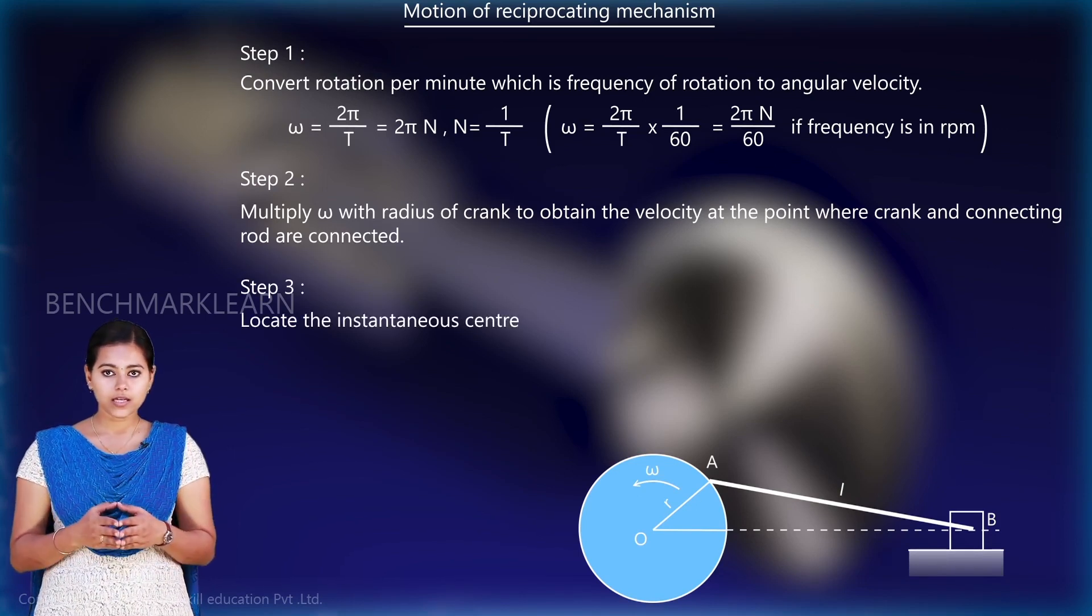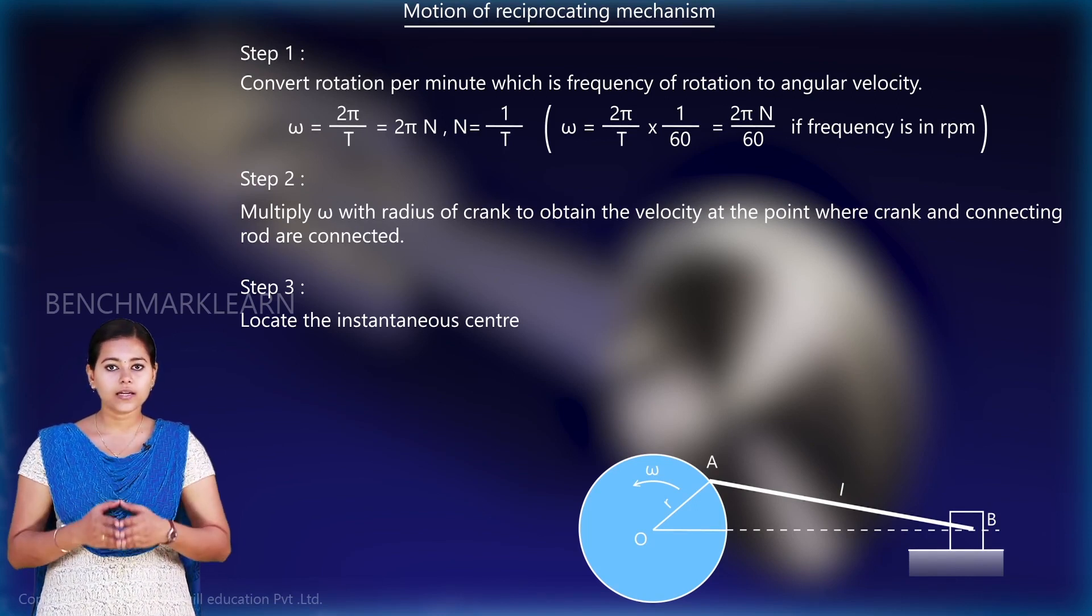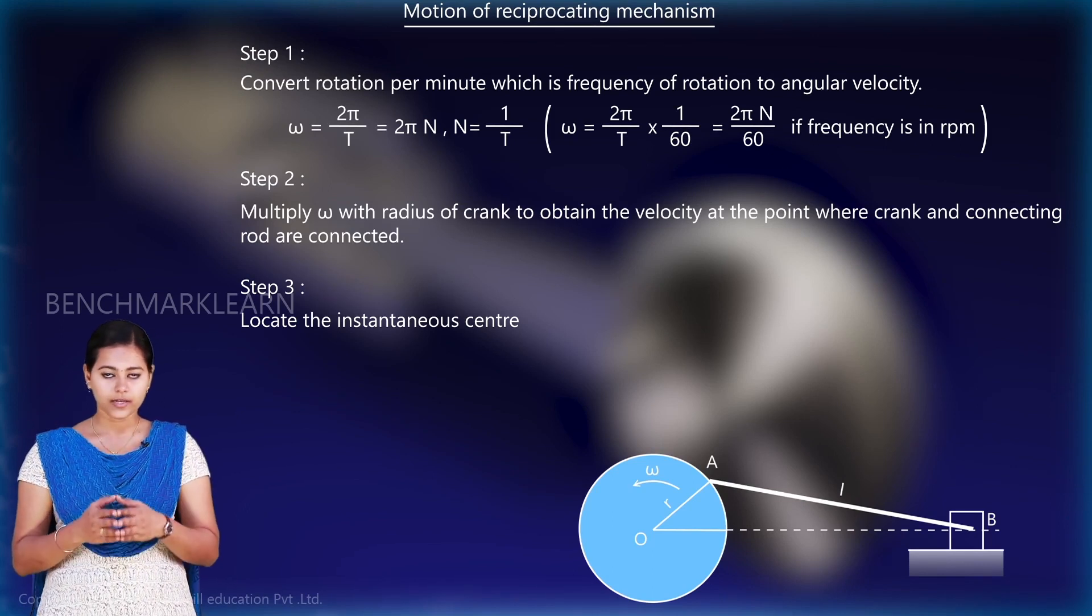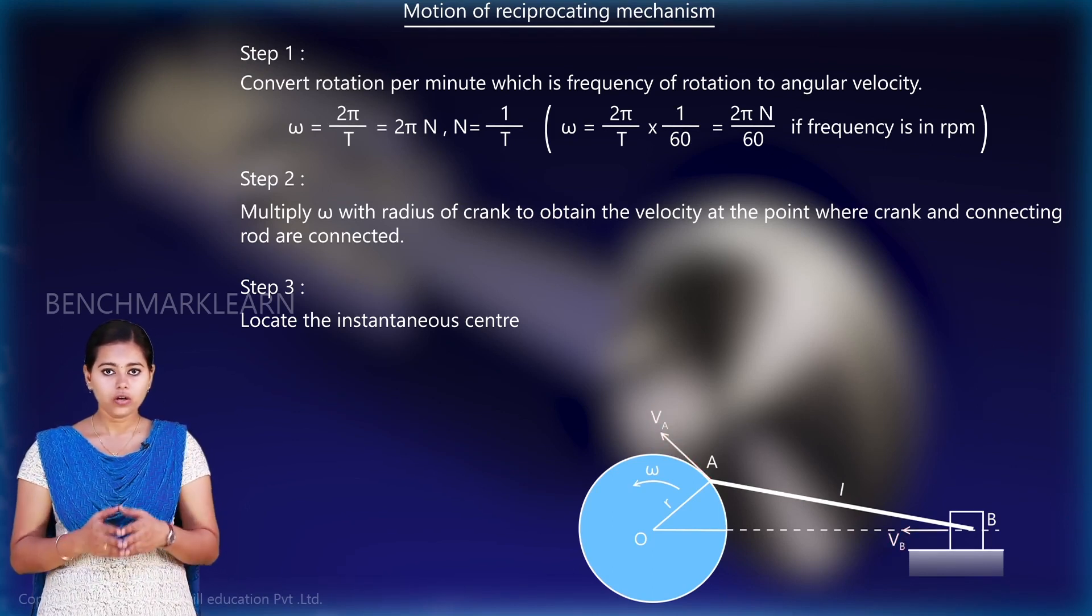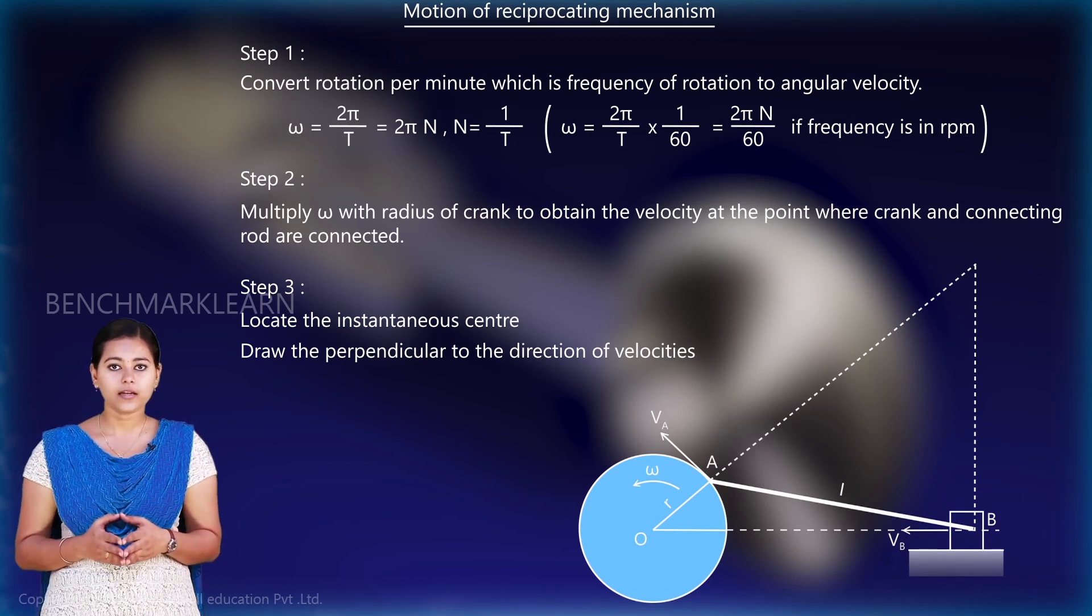In the third step, we locate the instantaneous centre at the points connecting the crankshaft and the connecting rod with the piston. The velocities are marked as shown. Now, draw perpendiculars to the direction of velocities and they intersect at a point I. This will be the instantaneous centre.